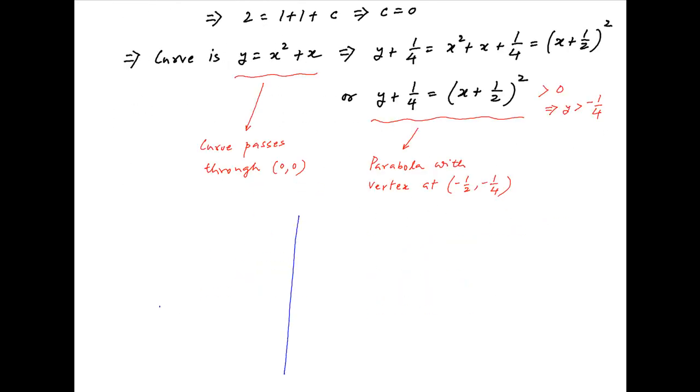We are now in a position to plot this curve on the Cartesian plane. The vertex of the parabola is at the point (-1/2, -1/4) and the curve is an upward facing parabola that passes through the origin and always stays above the line y is equal to -1/4.